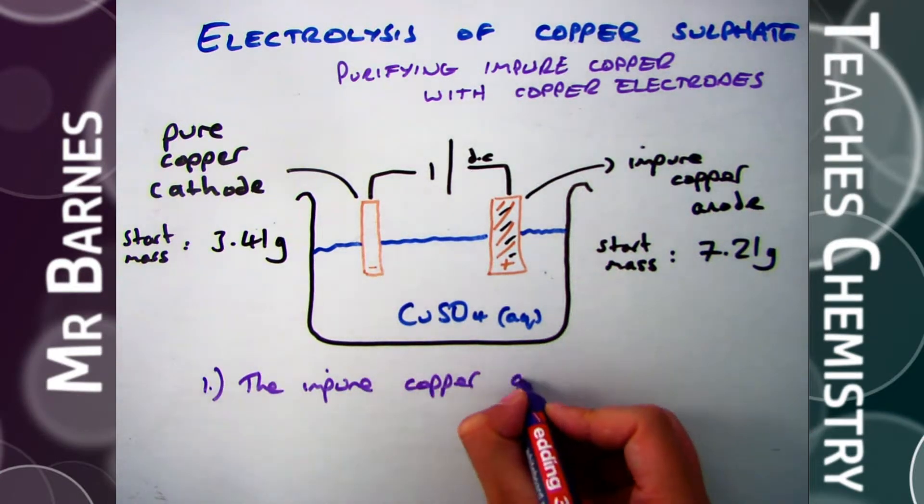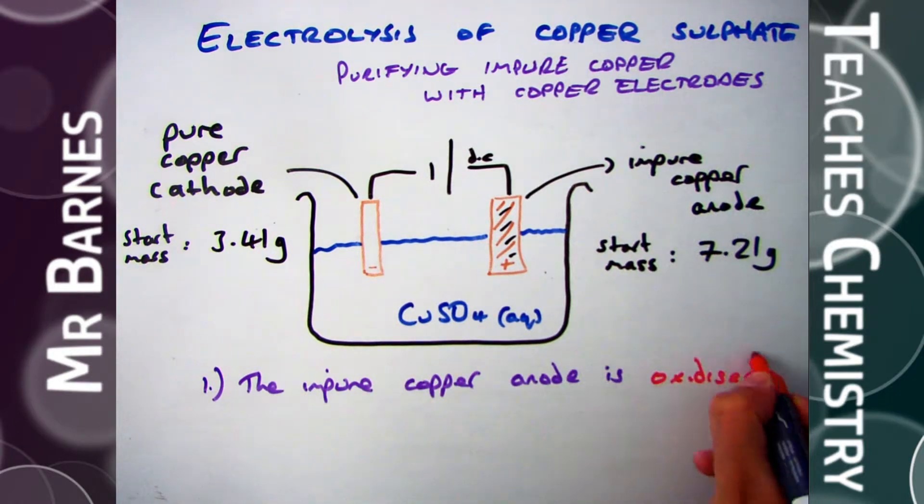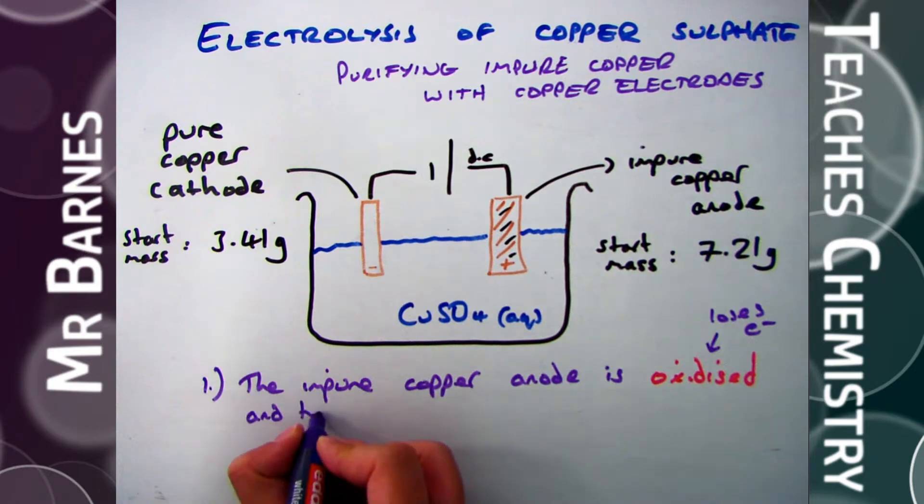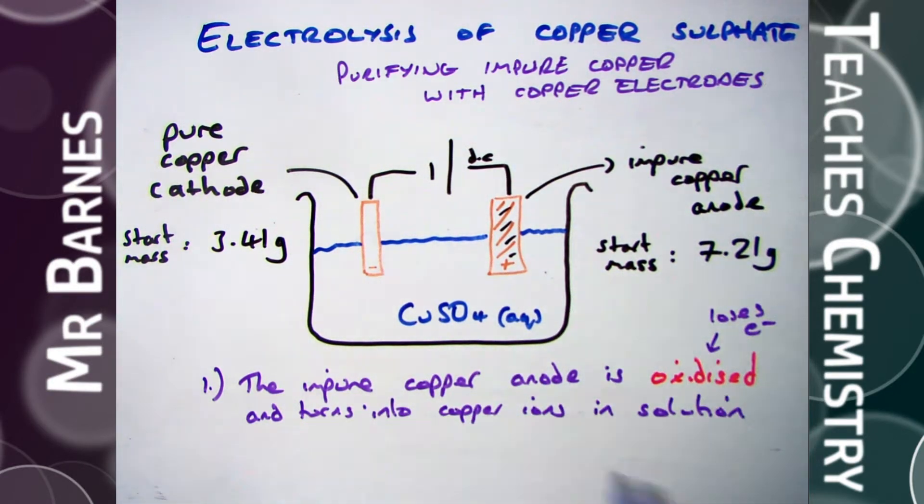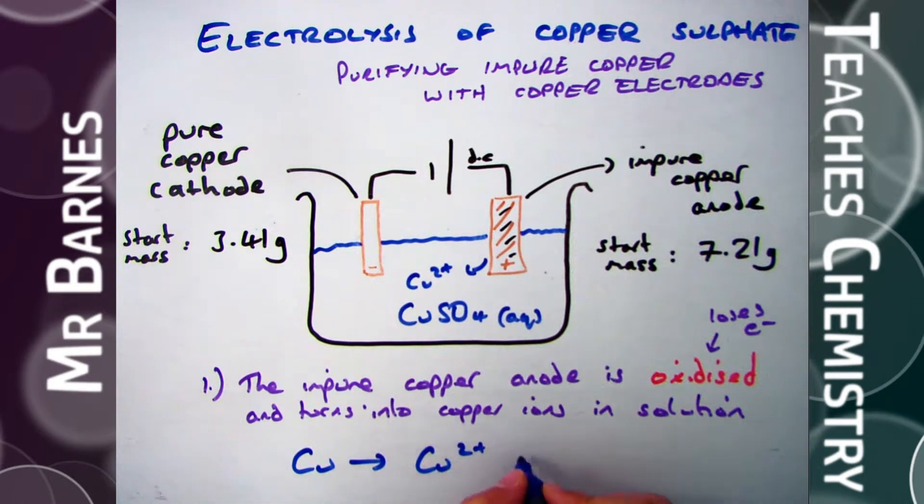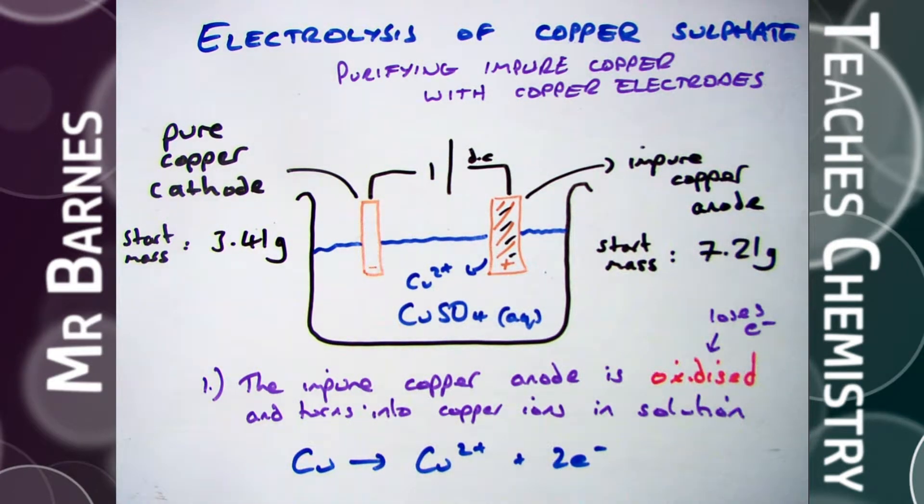The impure copper anode is oxidized. What we mean by that is it loses electrons. So the copper turns into copper ions, in this case Cu2+. As you can see from the half equation I'm writing here, you start off with your copper, it goes to Cu2+, and it does that by losing two electrons. So I get two electrons on the right-hand side.